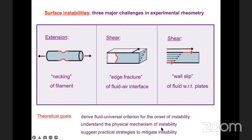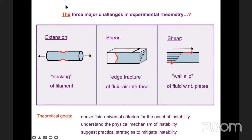Coming up with a fluid-universal, easily accessible, experimentally measurable criterion for the onset of instability is a theme that crops up throughout what I'm talking about, and has also cropped up in the shear banding discussions. As a physicist, I particularly want to understand the physics of the mechanism of the instability, and perhaps most importantly, to suggest practical strategies that might mitigate it. I'm going to go into the first of those now — and in a slightly grandiose way, I'd suggest these are the three major challenges in experimental rheology, which a couple of eminent theorists and experimentalists have concurred with.